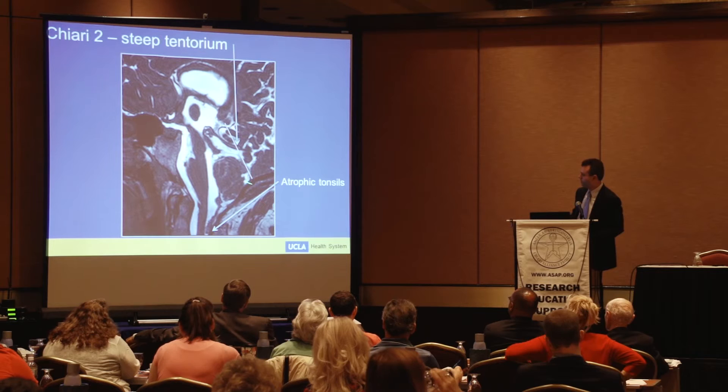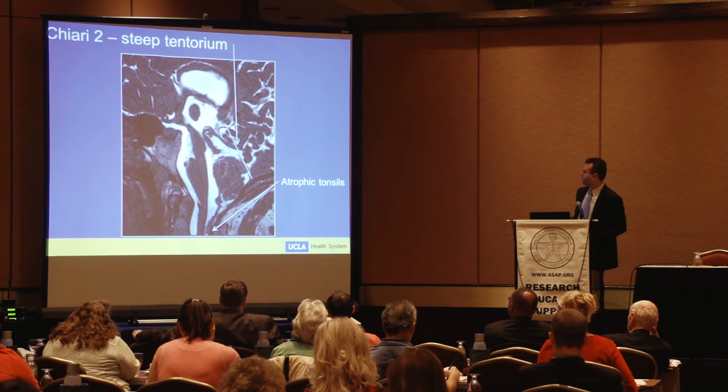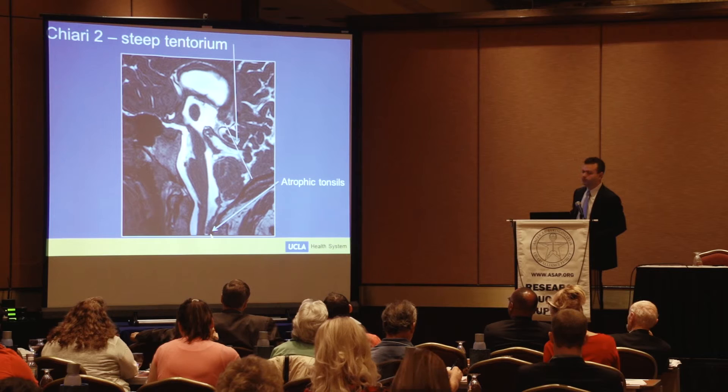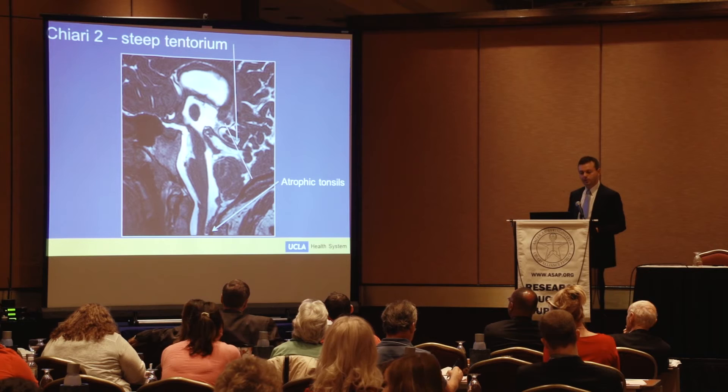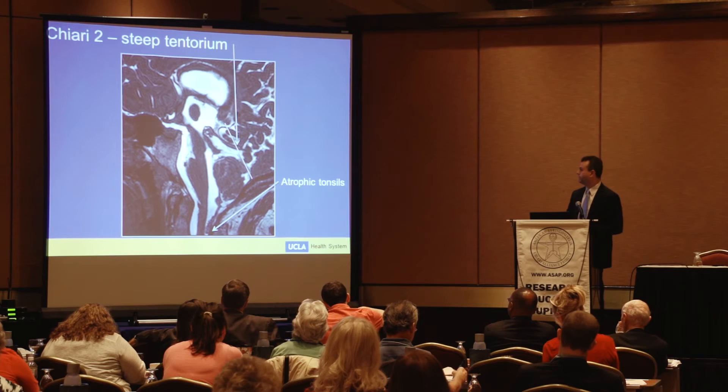Another sign of Chiari 2 is a very steep tentorium. The torcula — where the main veins of the brain come together — is very low, and the boundary between the cerebrum and cerebellum is very steep. This is an older patient with a Chiari that apparently wasn't treated. We can see the tonsils are very atrophic. This happens frequently in unsuspected patients — it's thought that compression of the vessels gradually makes the cerebellum atrophic and kind of cures itself, if you're willing to wait that long.